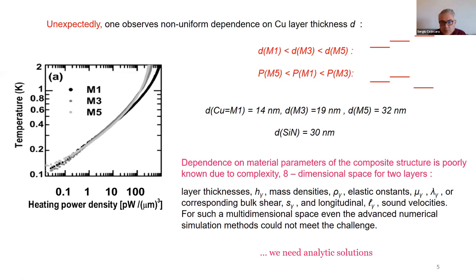I should also mention that the problem was considered in various experimental and theoretical numerical studies. You should realize that we have much too many parameters here. Even a simple, so-called simple two-layer structure contains an eight-dimensional space describing the phonons. You have the thicknesses of the layers, the mass densities, elastic constants, which should define the properties of the phonons. So it's hopeless to consider the whole space of these parameters. That's why we needed an analytical solution.